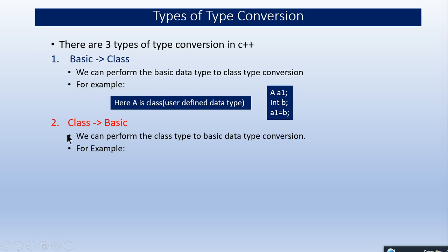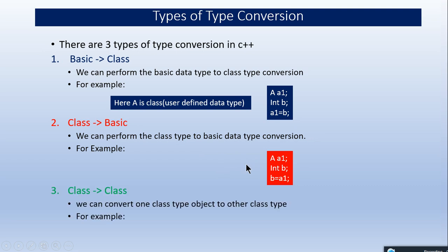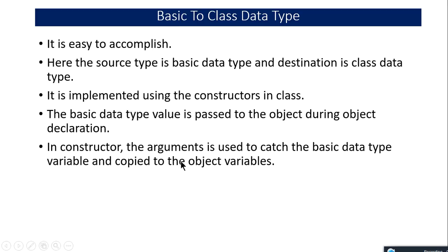I can also do the opposite — that is class to basic. If I reverse the assignment from a1 equals b to b equals a1, that becomes class to basic data conversion. Now if both a1 and b1 are objects of class A and class B respectively, then it will be called class to class type conversion. So there are three types of type conversion.